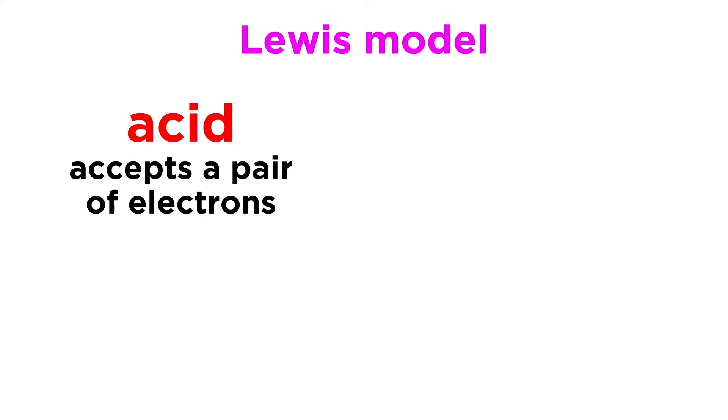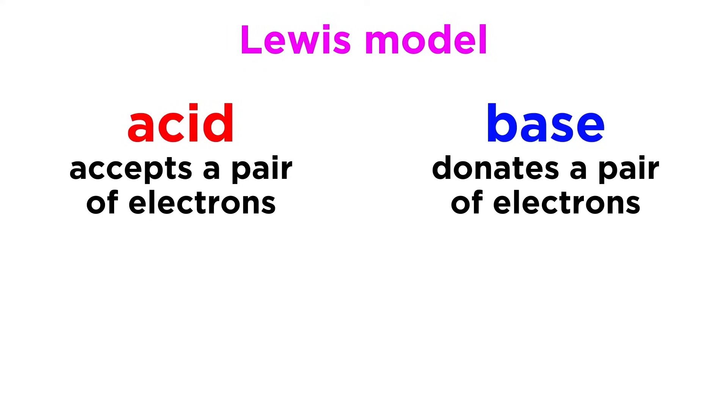A Lewis acid is a substance which accepts a pair of electrons, while a Lewis base is one which donates a pair of electrons.